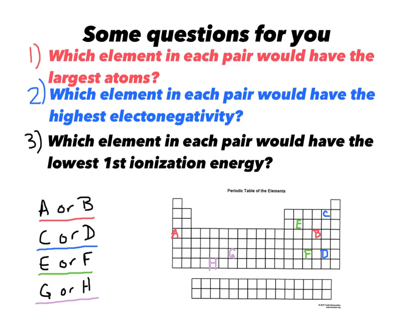Now that you know what the trends are, here are some questions. Each question has four parts. Number one: which element in each pair would have the largest atoms? Compare A and B, C or D, E or F, G or H — four answers. Number two: which element in each pair would have the highest electronegativity? Compare A to B, C to D, E to F, G to H. Number three: which element in each pair would have the lowest first ionization energy? Be prepared to answer those questions in class, discuss them, and make sure you understand how these trends work. Thanks, have a great day. Bye-bye.